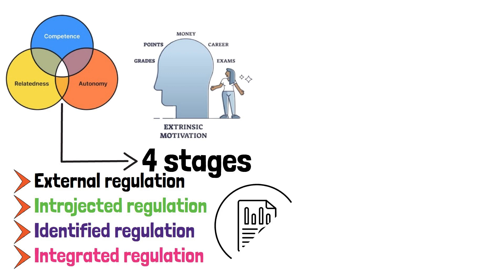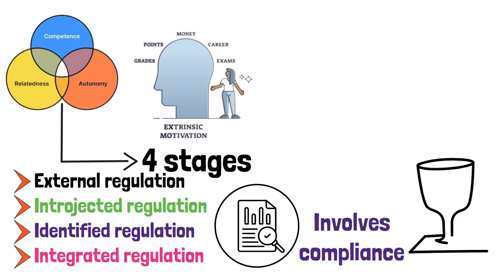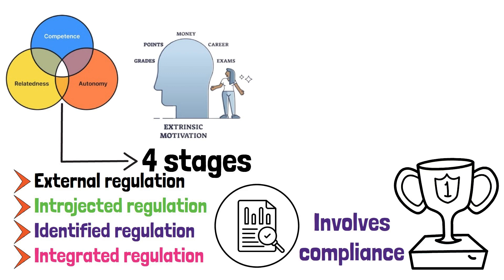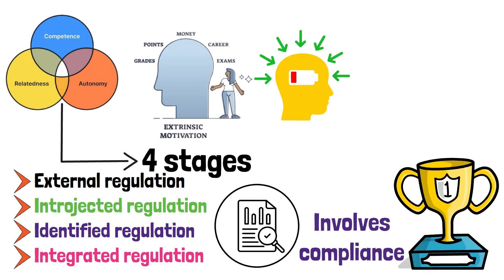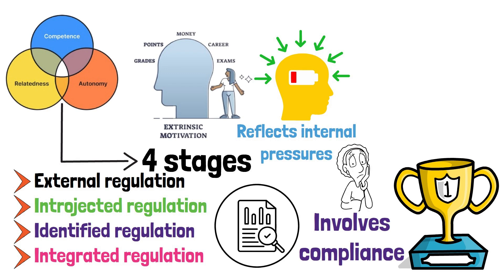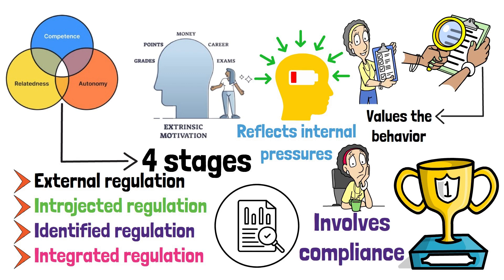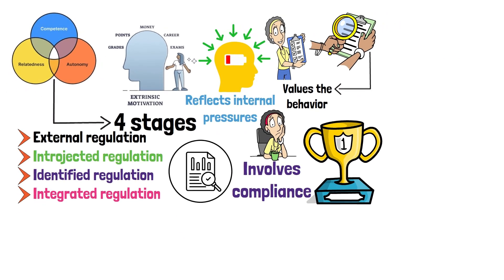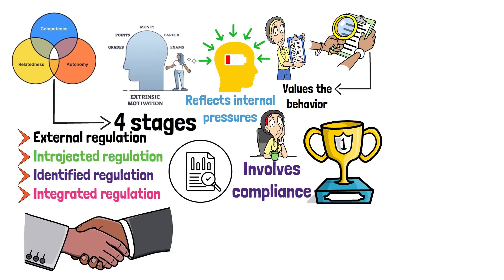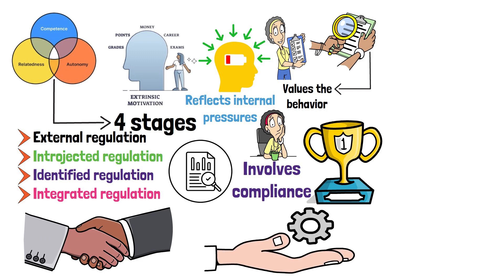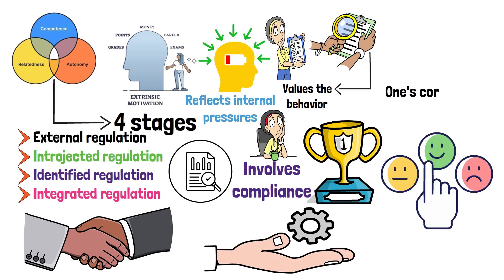External regulation involves compliance with external demands or rewards. Introjected regulation reflects internal pressures like guilt or shame. Identified regulation occurs when the individual values the behavior and sees its importance. Finally, integrated regulation is the most autonomous form, aligning behaviors with one's core values and self-concept.